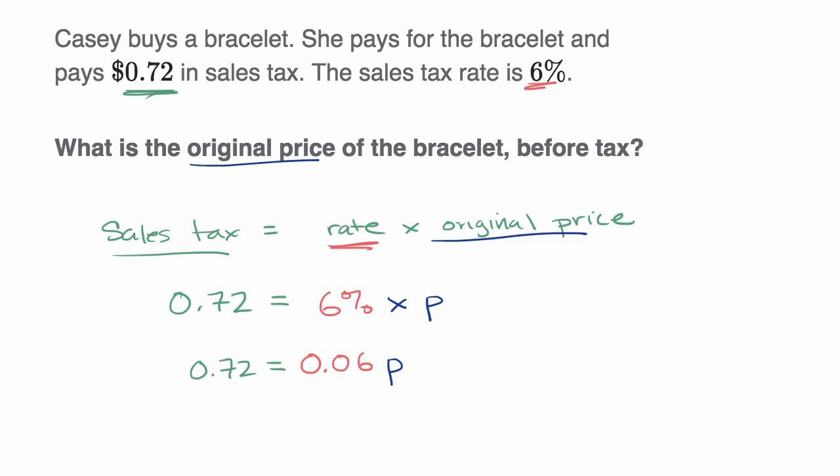Now we can just divide both sides by 0.06 to solve for the original price. So on the right-hand side, I have P. On the left-hand side, 0.72 divided by 0.06—that's going to equal 12.